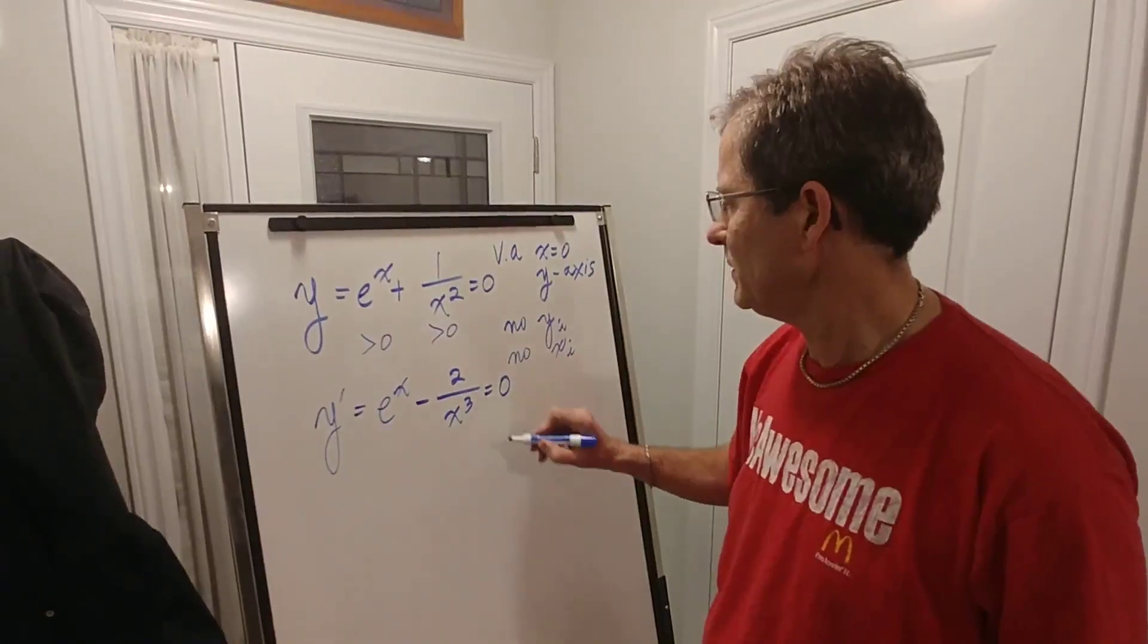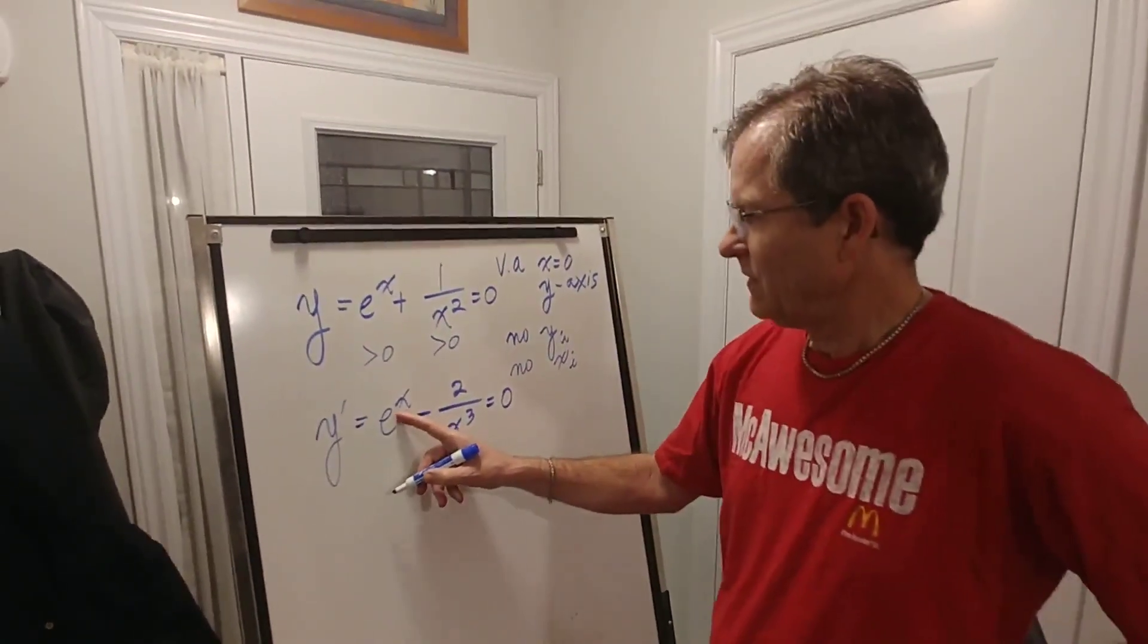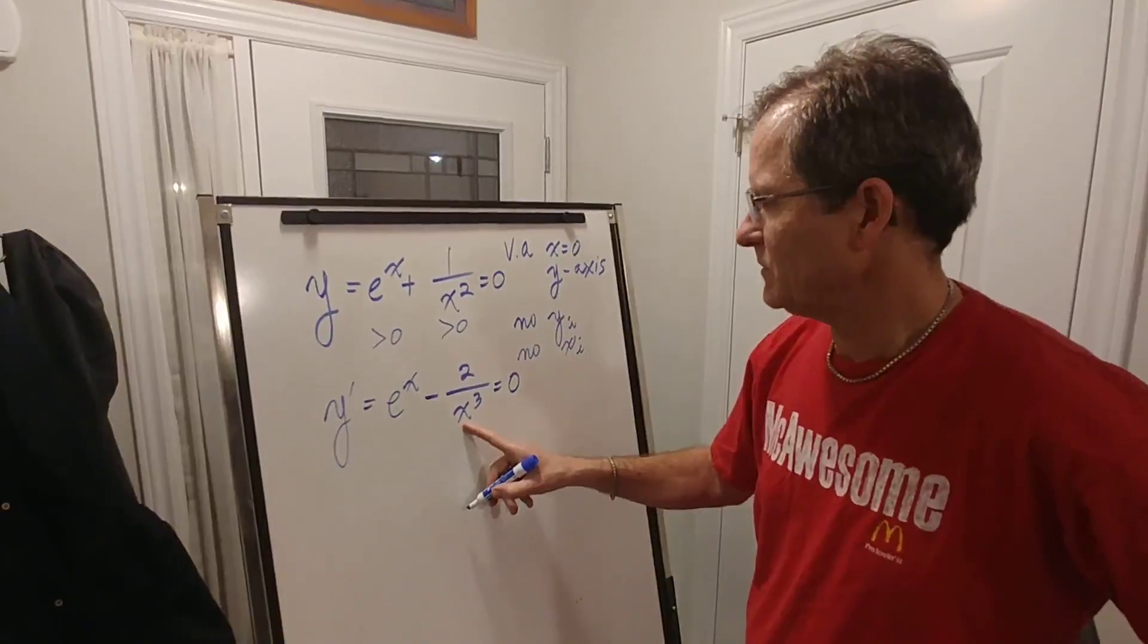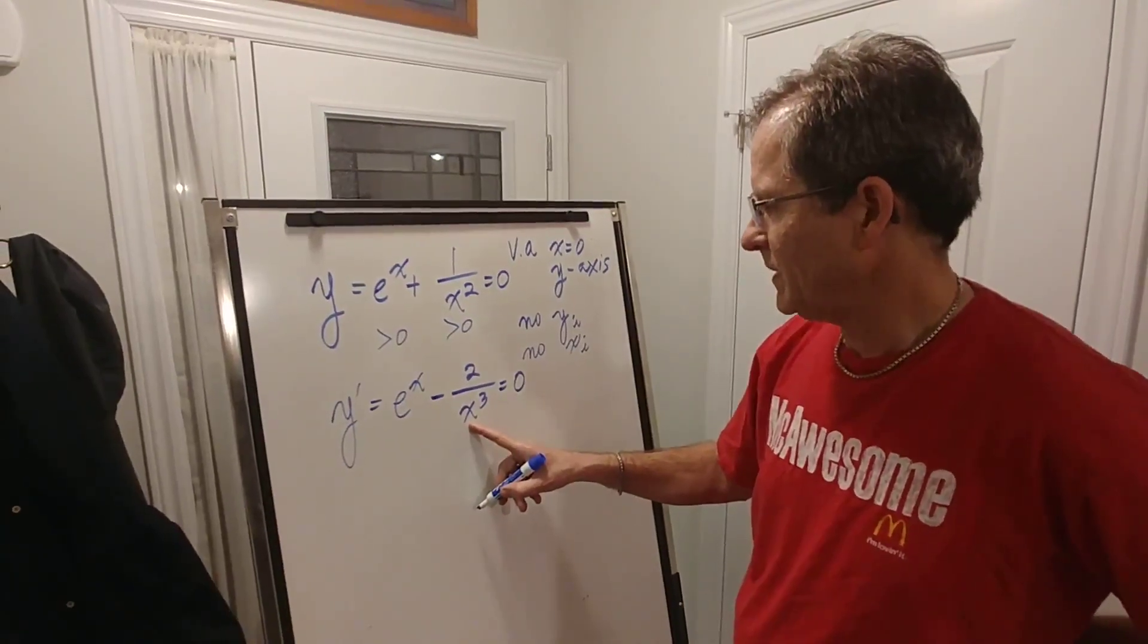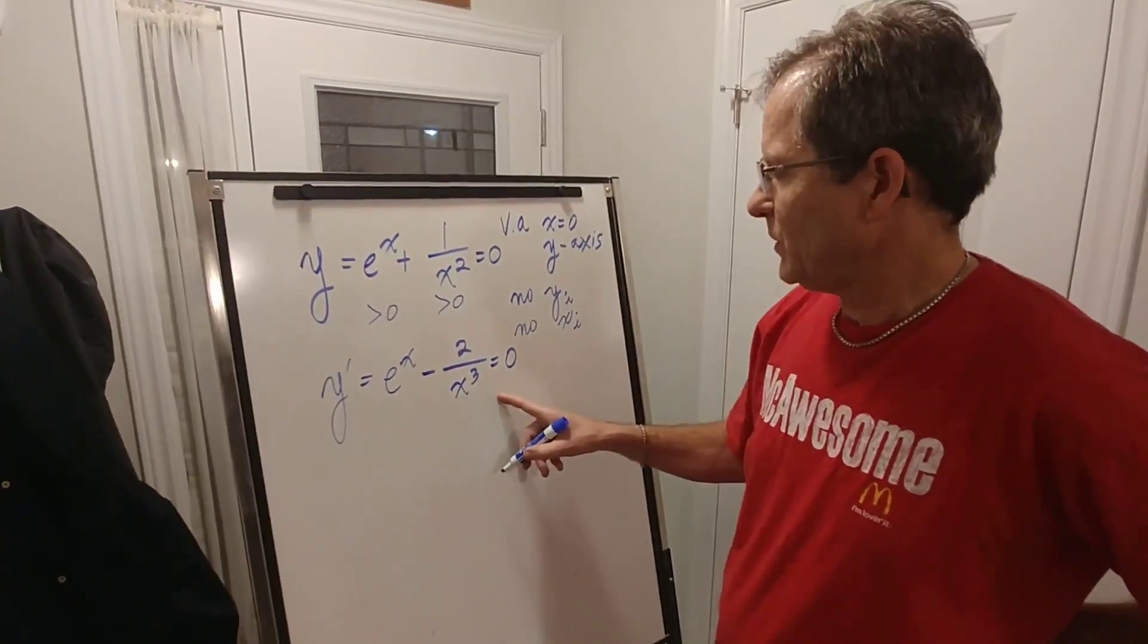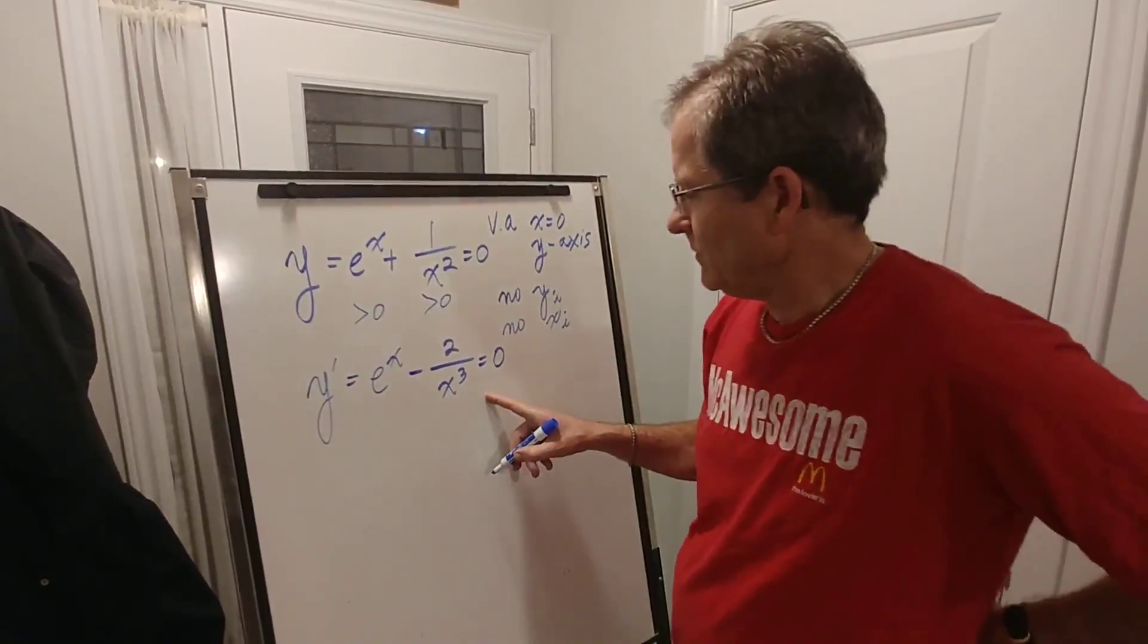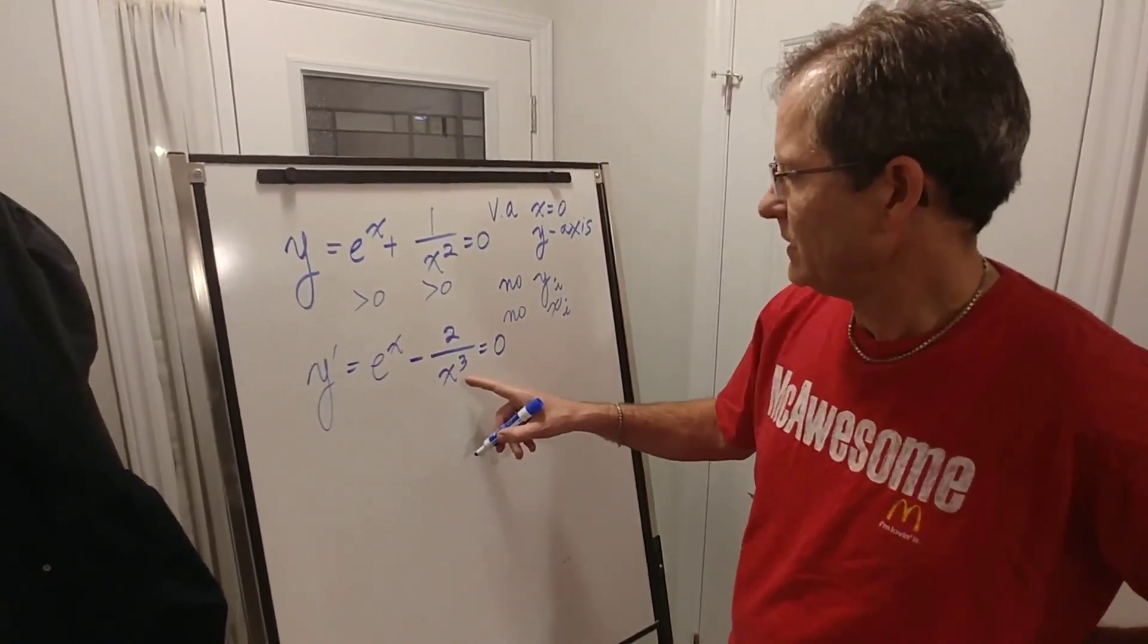If I set that equal to zero, I want to find the x value, which will be the x value of the maximum or the minimum. How do you solve an equation like this? Well it turns out you can't exactly.